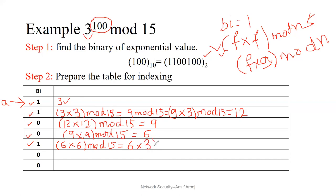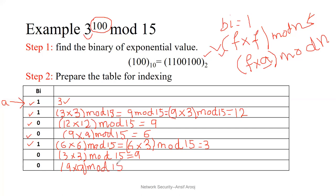Since the next digit is 1, we do two steps. First f into f: 6 into 6 mod 15 equals 6. Then f multiplied by a: 6 multiplied by 3 mod 15. 6 times 3 is 18, and 18 mod 15 equals 3. Then we have 0, so we multiply 3 by 3 mod 15 which equals 9. Last but not least is again 0, so we multiply 9 by 9 mod 15, which equals 6. So the answer of 3 raised to power 100 mod 15 is equal to 6.